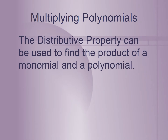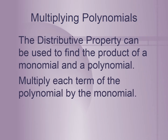When we're multiplying polynomials, the distributive property is going to come in handy a lot. With the distributive property, we can find the product of a monomial and a polynomial — just like we did in that last example. You multiply every term of the polynomial by the monomial. Remember, monomial means just one term.